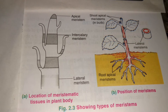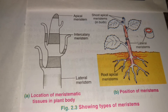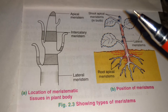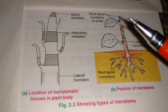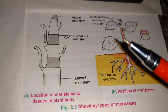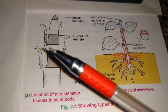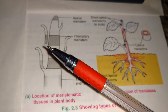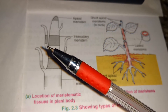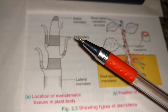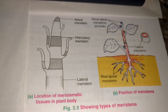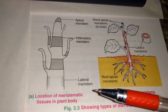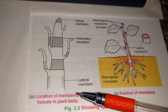Then, intercalary meristem. They are present at the base of leaves or internodes, or either side of a node, and their important role is in the growth of the internode and leaves.